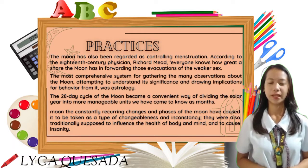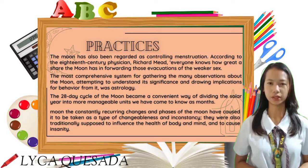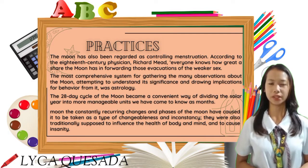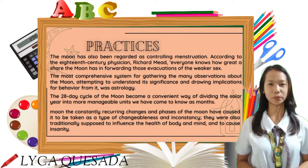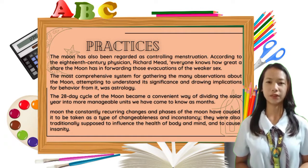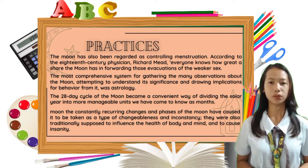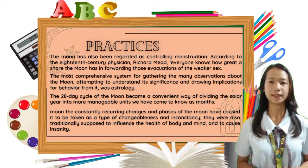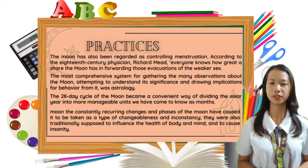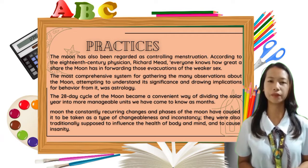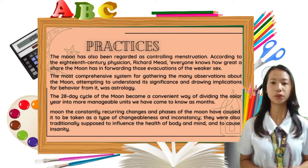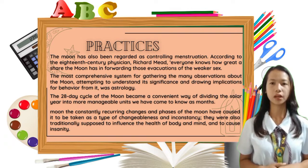Here are the practices of the moon. The moon has also been regarded as controlling menstruation. According to the 18th century physician Richard Mead, everyone knows how great a share the moon has in forwarding those evacuations of the weaker sex. The very word 'menstruation' means 'moon change,' while in France it's called 'le moment de la lune.' The most comprehensive system for gathering observations of the moon and understanding its significance was astrology. The 28-day cycle of the moon became a convenient way of dividing the solar year into more manageable units we have come to know as months.